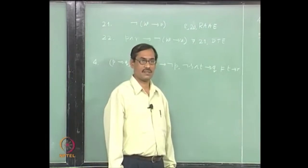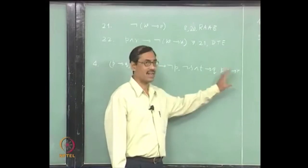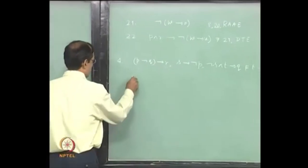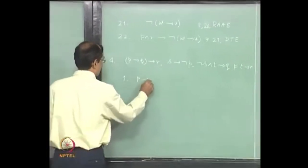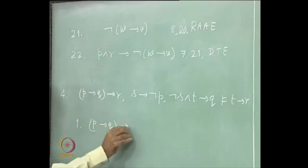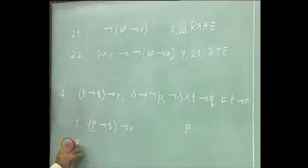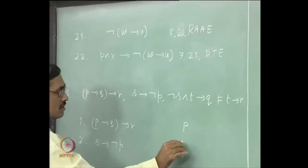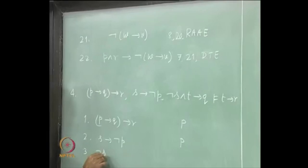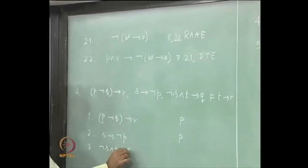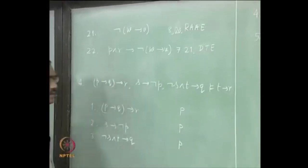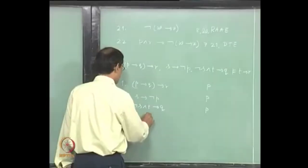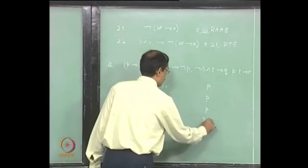Contradiction. But here it may be possible to get R directly without going to reductio ad absurdum. Let us see that. We start with the premises first. P implies Q implies R is a premise. S implies not-P is a premise. Not-S and T implies Q is a premise.